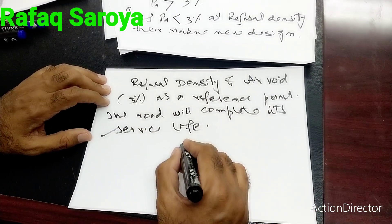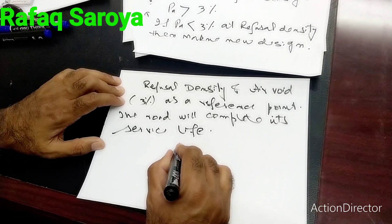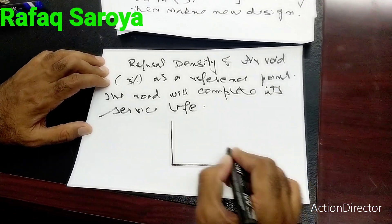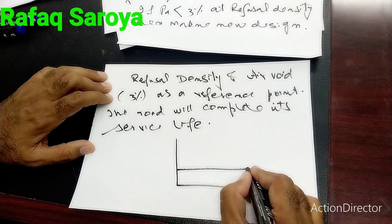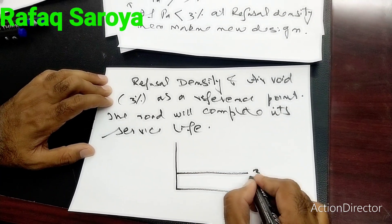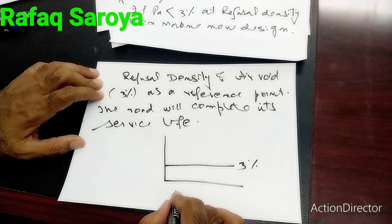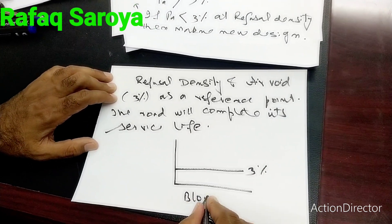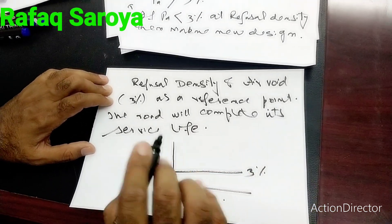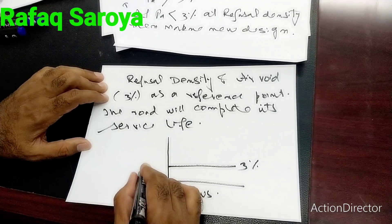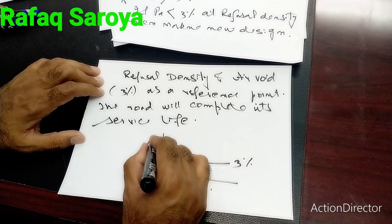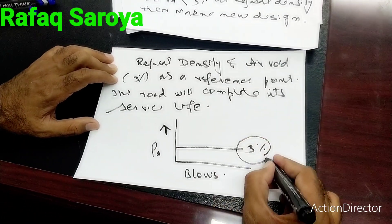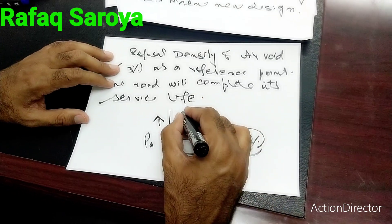In other words, this 3% air void is known as the threshold level — it cannot be violated. I will also draw a graph at a later stage, but just for your introduction, this 3% air void is the threshold level.